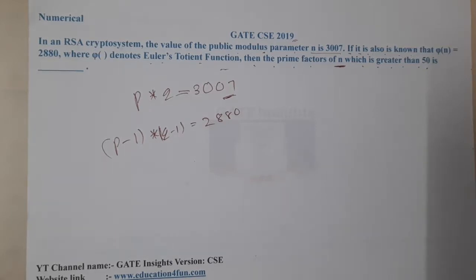They also give that which is greater than 50. So then the prime number of n which is greater than 50 is. So I think we should use some trick here, right? So what shall we do? Okay, so 3007.